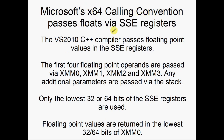Microsoft's x64 calling convention passes floats via the SSE registers. The first four floats are passed in XMM0, 1, 2, and 3 respectively, and any additional parameters are passed by the stack, exactly the same as 32-bit or 64-bit integers. Only the lowest 32 or 64 bits of the SSE registers are used, and floating point values are returned in the lowest 32 or 64 bits of XMM0.